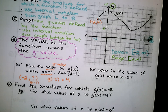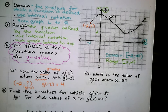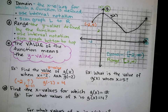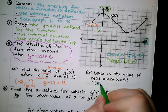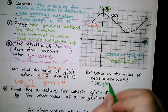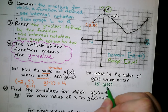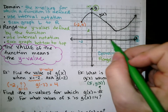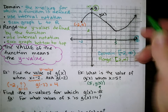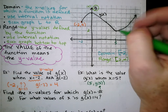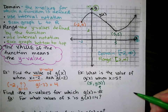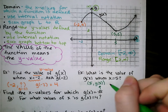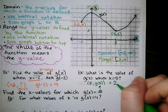What is the value of g of x when x equals 5? We've got the same thing going on. When x equals 5, we're looking for 5 comma g of 5. So 1, 2, 3, 4, 5 — here's x equals 5. This ordered pair here would be 5, 2. So the value of g of x when x equals 5 is 2.